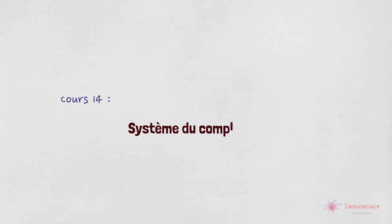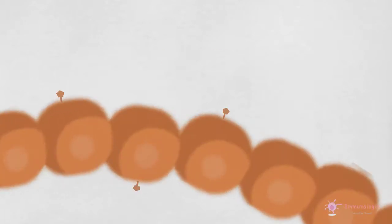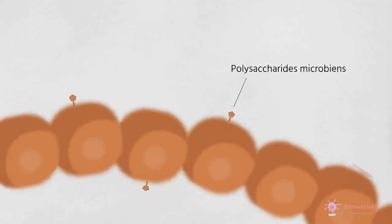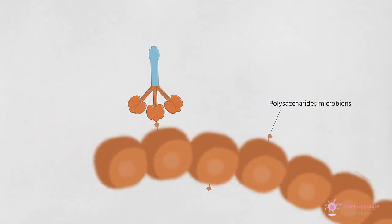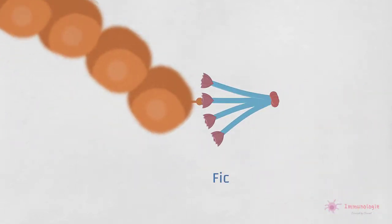Le système du complément. La voie des lectines est déclenchée par la liaison de polysaccharides microbiens à des lectines circulantes, telles que la MBL et les ficolines.